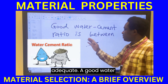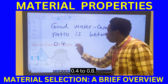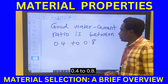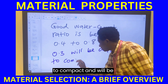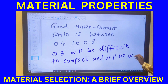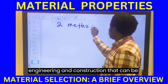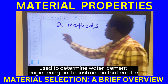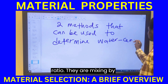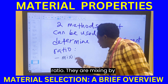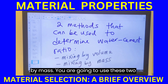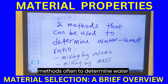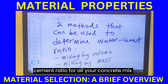A good water-cement ratio is between 0.4 to 0.8. A ratio of 0.3 will be difficult to compact and will be dry. There are two methods in civil engineering and construction to determine water-cement ratio: mixing by volume and mixing by mass.